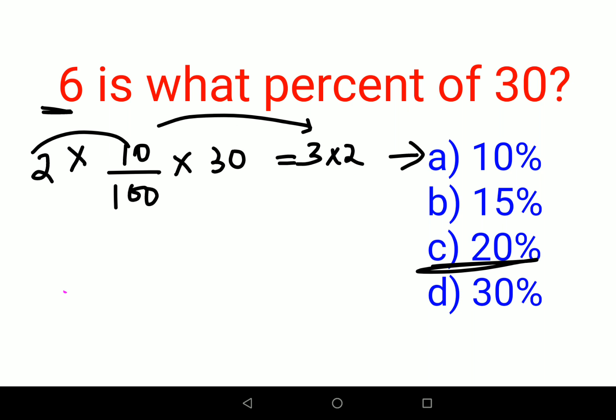But still, if this is not striking you, here also you can do this. 20%, 20 upon 100 into 30. Here also still, eventually, you will get the answer as 6. So here, I can say option C is my answer.